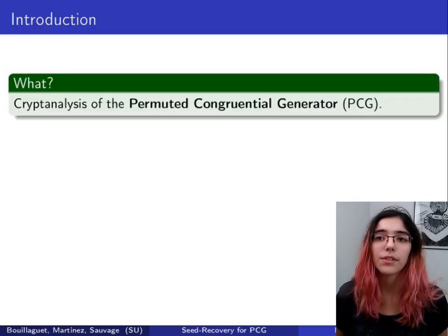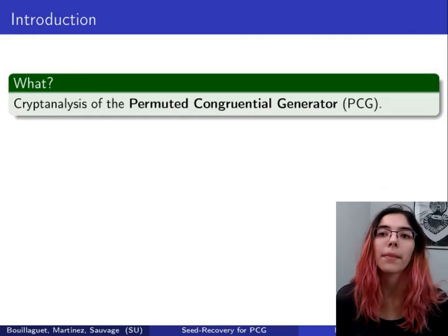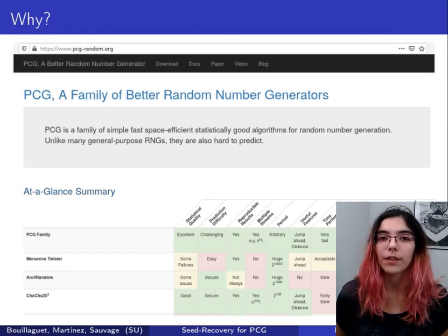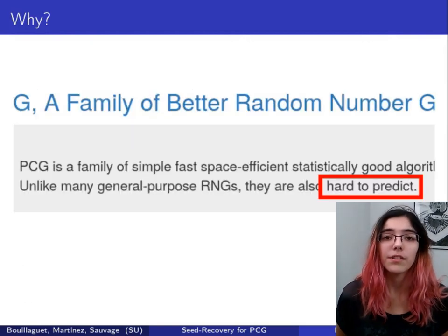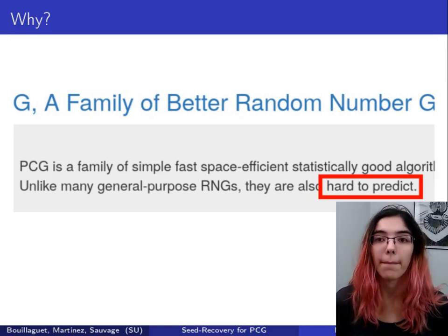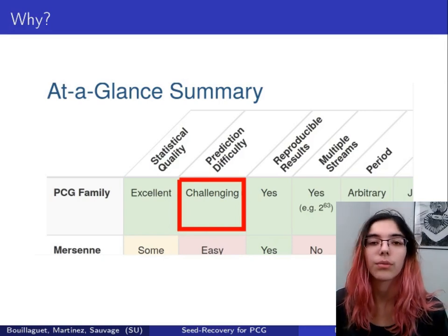We decided to study the PCG, or Permuted Congruential Generator, because the PCG is claimed to be hard to predict on the advertising website pcg-random.org. Attacking it is said challenging, so challenge accepted.